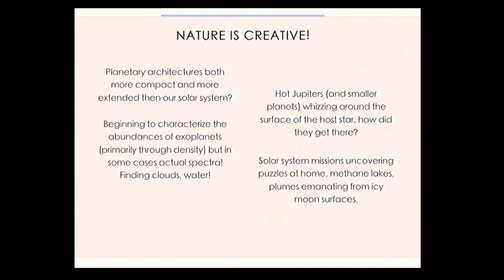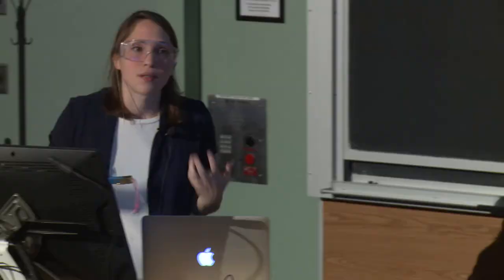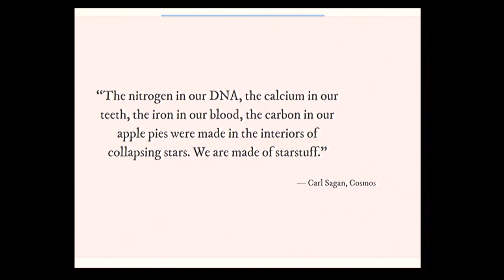To end the intro part: nature is very creative. We're also characterizing abundances of exoplanets and getting rich data from missions to bodies within our own solar system. Where does all this come from? We're all star stuff — as Carl Sagan said: 'The nitrogen in our DNA, the calcium in our teeth, the iron in our blood, the carbon in our apple pies were made in the interiors of collapsing stars. We are made of star stuff.' That is probably one of the most profound statements made in this century.